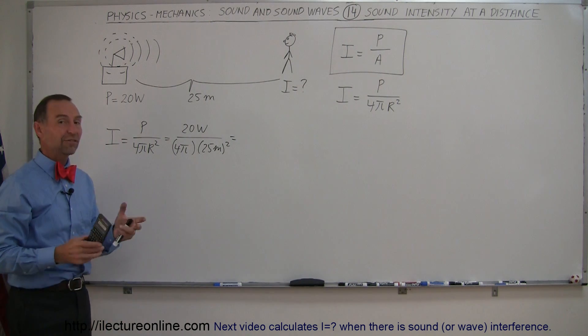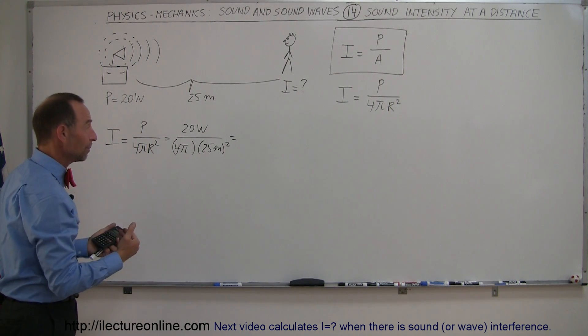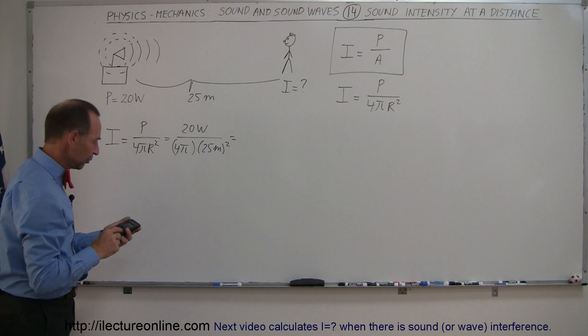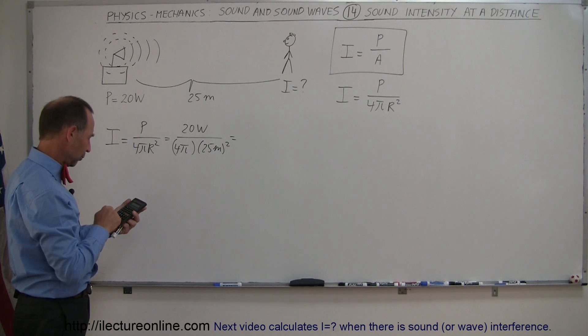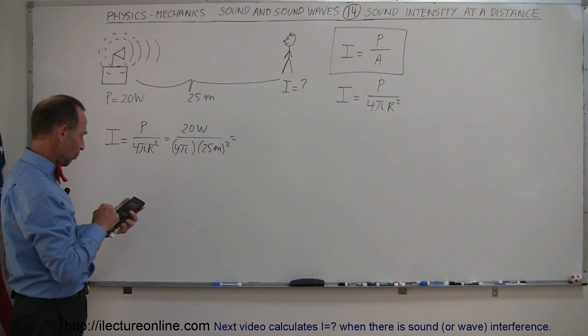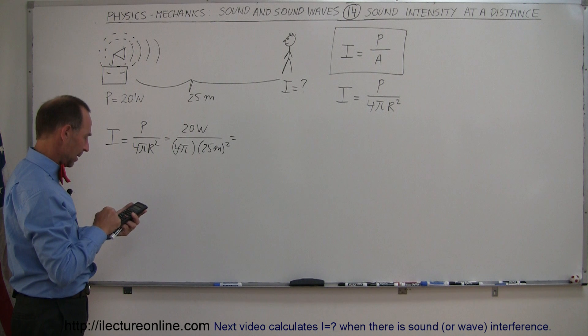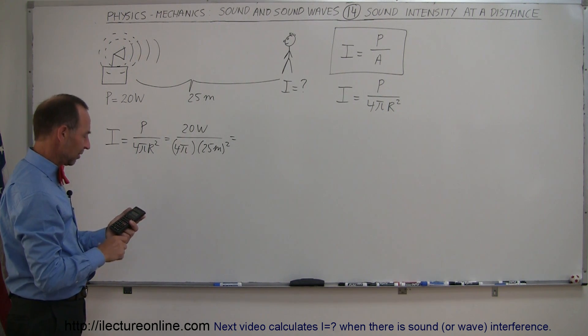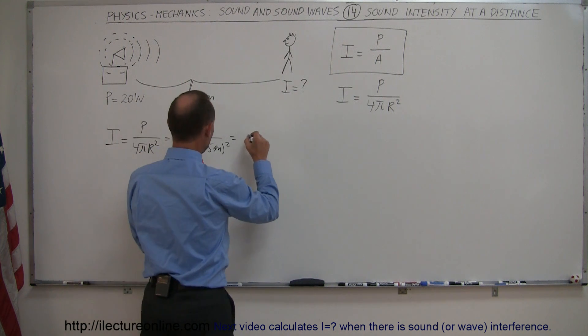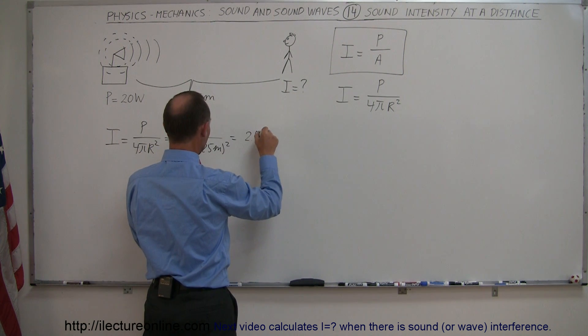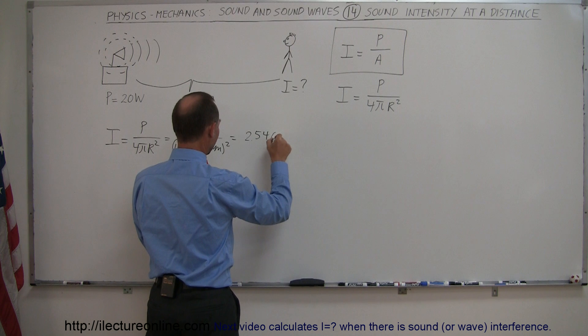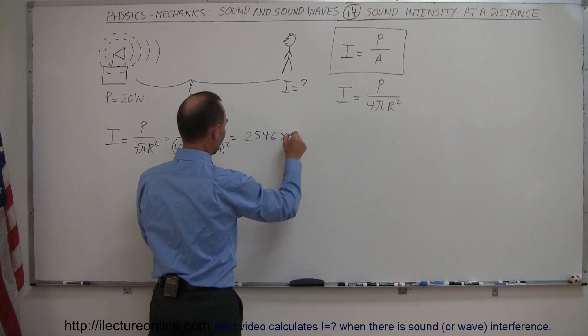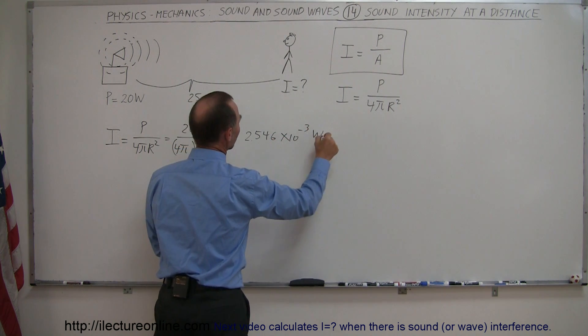And of course, this will first give us intensity in watts per square meter, and then we can still convert it to decibels. So let's do that. So we have 20 divided by 4 divided by π and divided by 25 squared equals, and so that gives us a sound intensity of 2.546 × 10⁻³ watts per square meter.